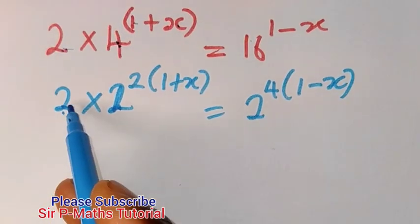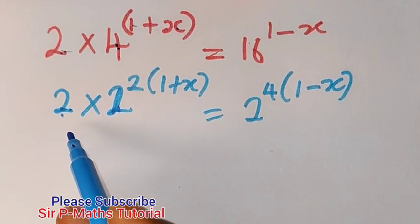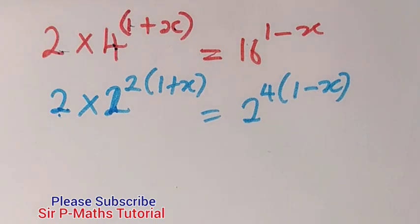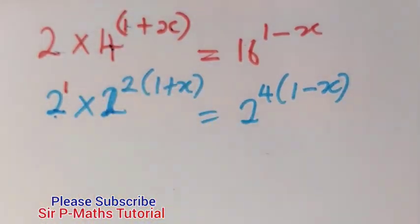And in indices, when 2 bases that are same are multiplying, we will take 1 and add their powers. Recall that the power of 2 here is 1, invisible 1.